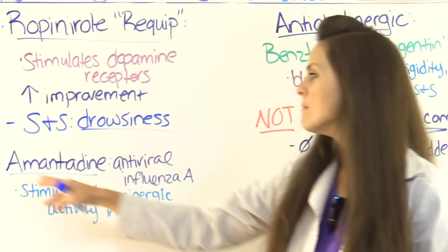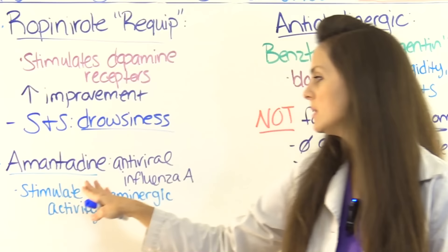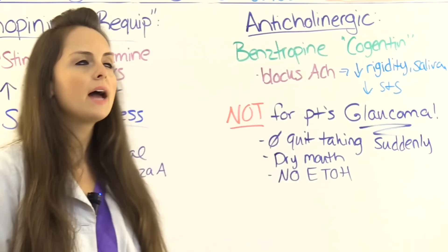Another type of drug used to treat Parkinson's is amantadine. It is also used as an antiviral in the treatment of influenza A, but they have found that it stimulates dopaminergic activity in the CNS, which helps with those signs and symptoms.